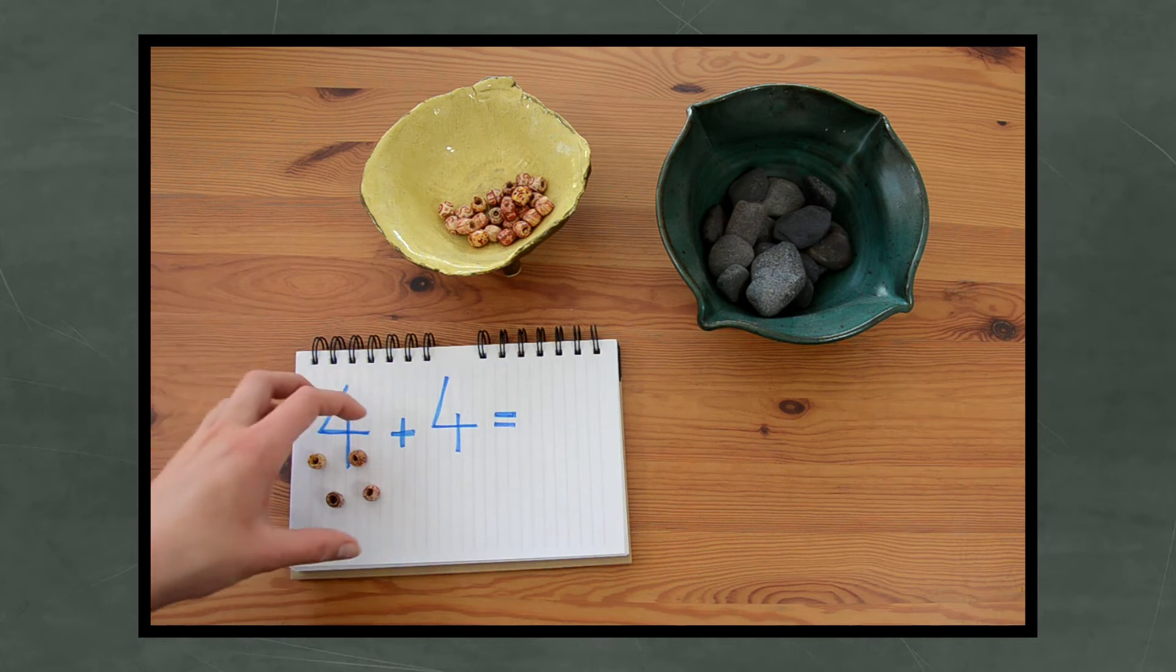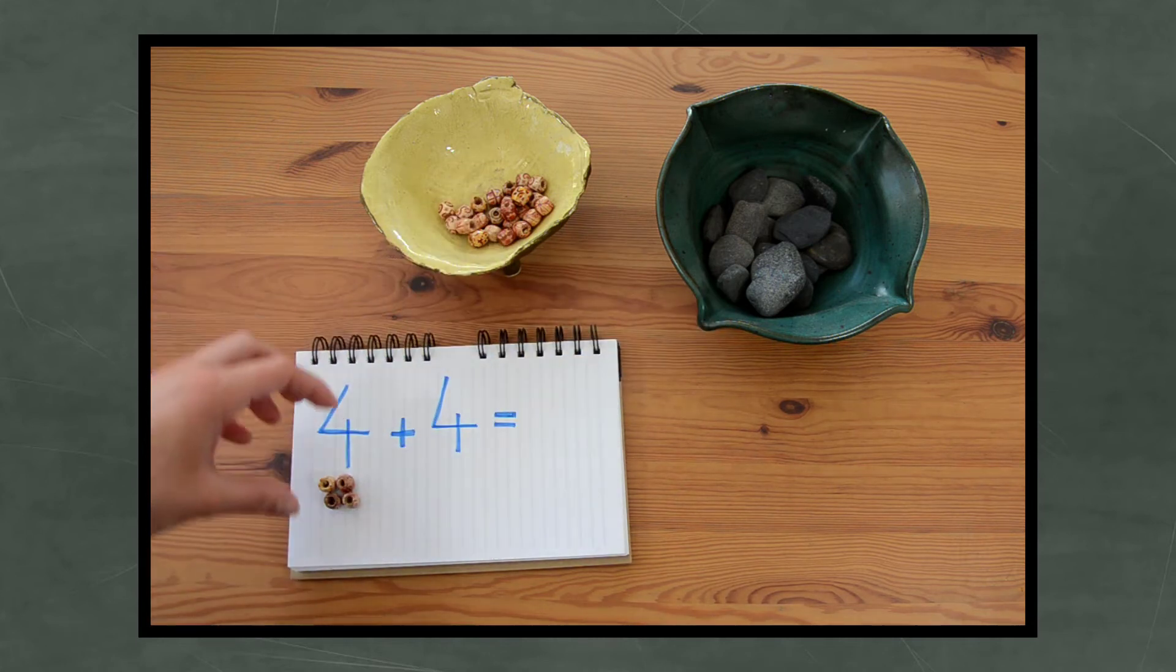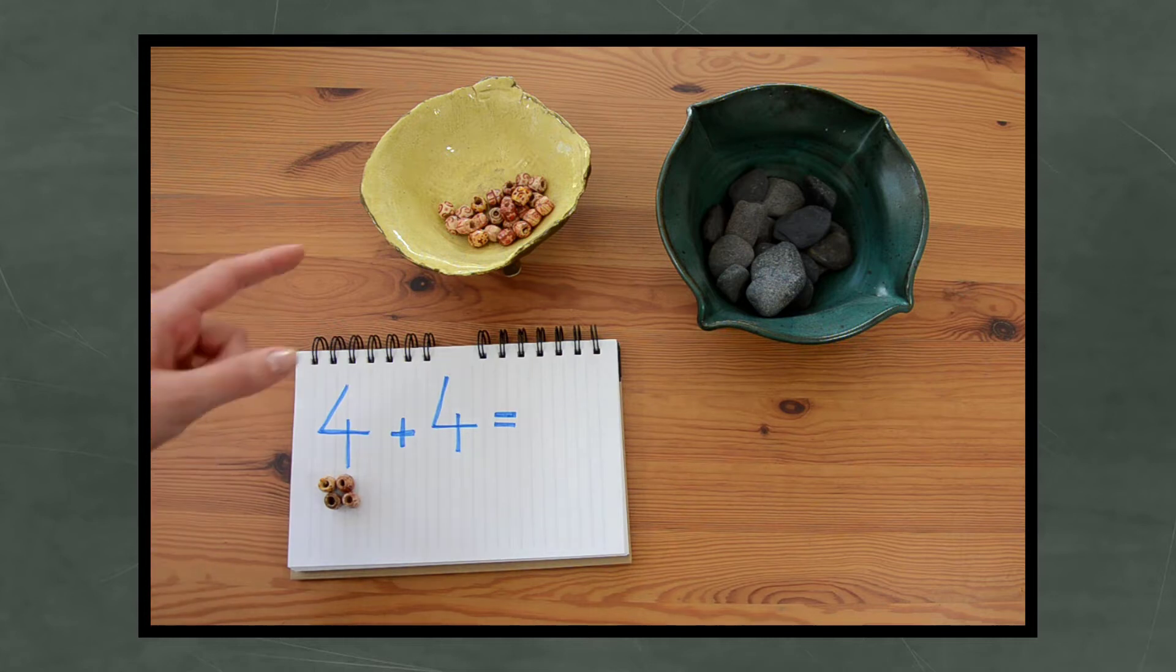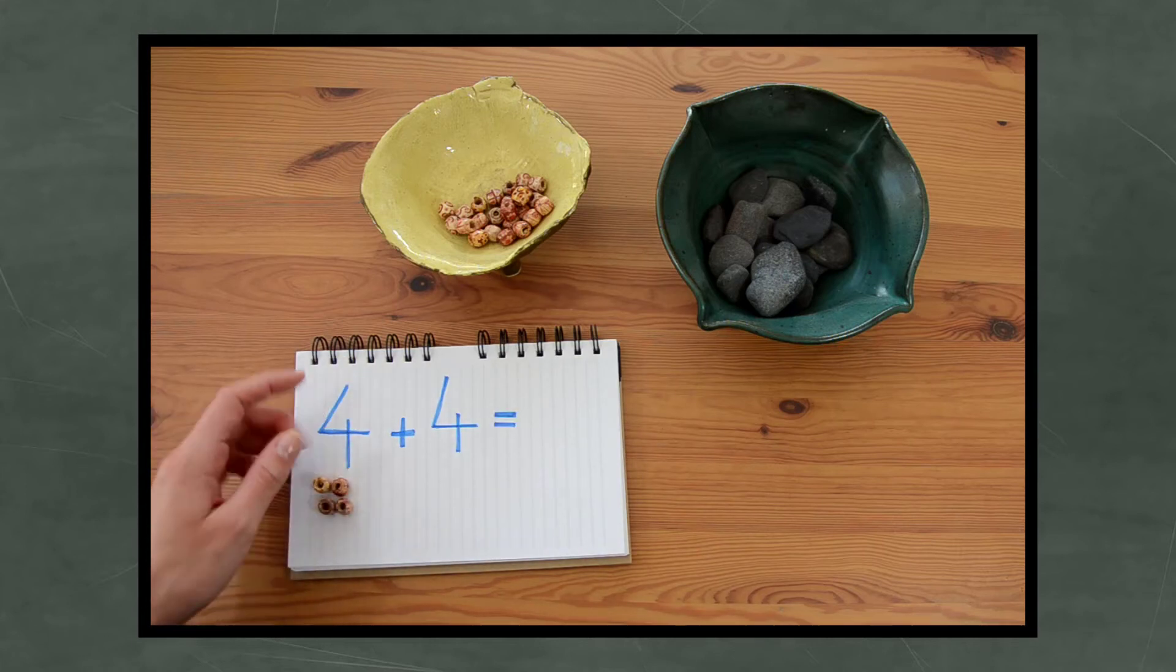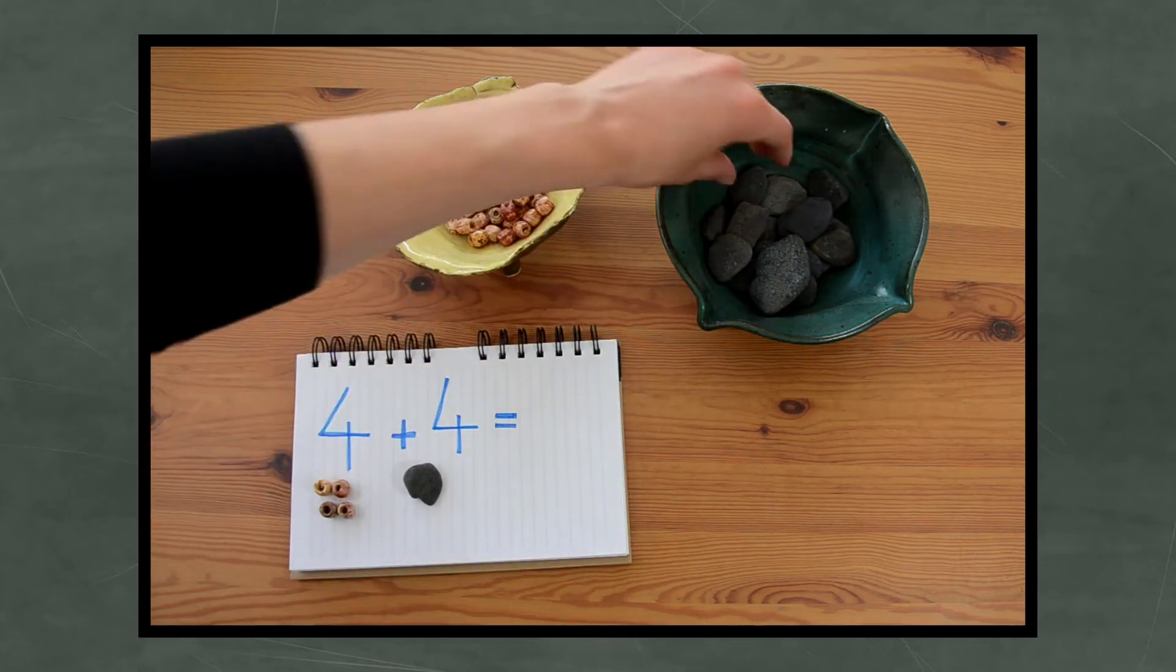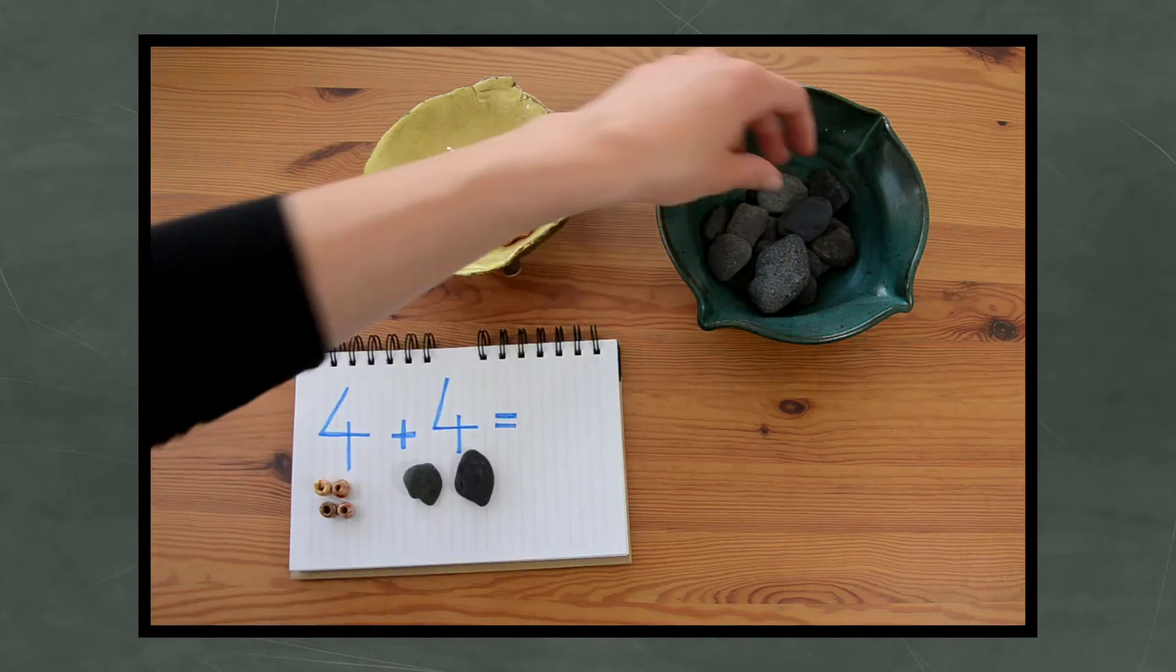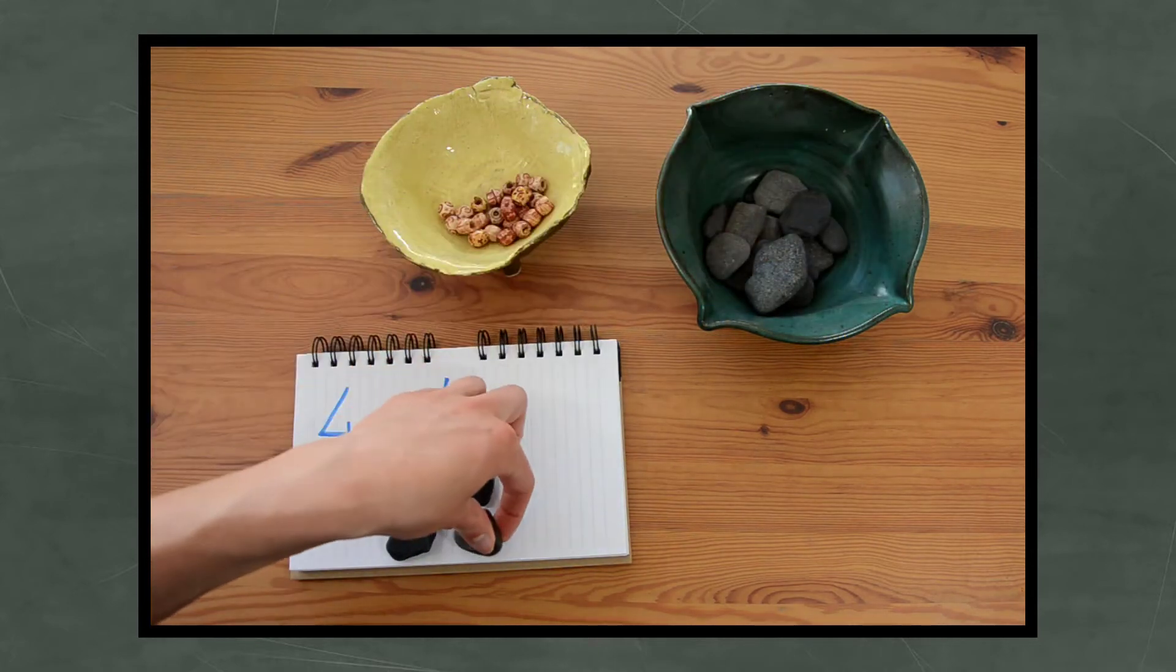And if you want you can actually do 4 beads and then 4 beads again and then just count all together. I like to use different loose parts just so I can see them being added together, but you can use the same loose parts for both sums if you want as long as you just count them all together. But I'm going to use my stones for the next 4. 1, 2, 3, 4.